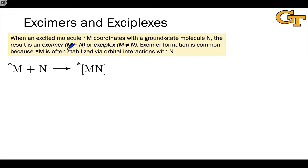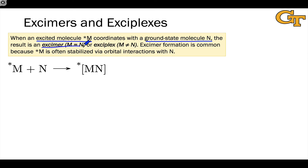The basic idea of exaplex or exomer formation is that an excited state molecule M* coordinates with a ground state molecule N, forming an excited state complex MN*. When M and N are identical, we're looking at an exomer. When M and N are different, we're looking at an exaplex.